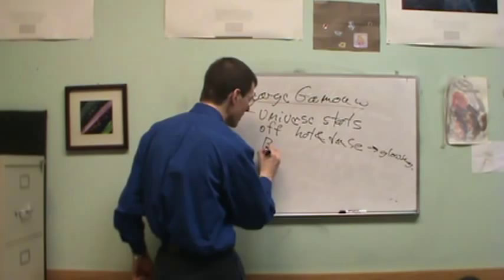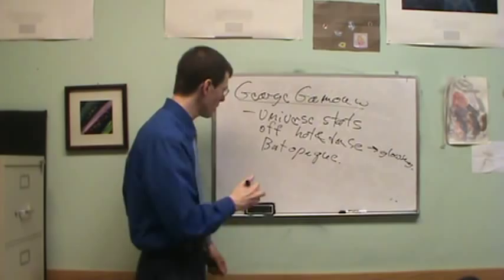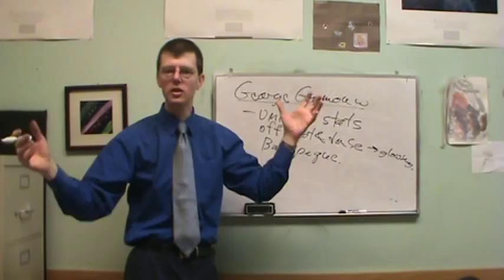And then, when it's really hot and dense, it's glowing but opaque. Opaque meaning light can't go through it. You can't see through it. And then it's all glowing, but the light can't get very far. And then there's a certain point at which the universe, or atoms would form, and then the universe would be transparent.